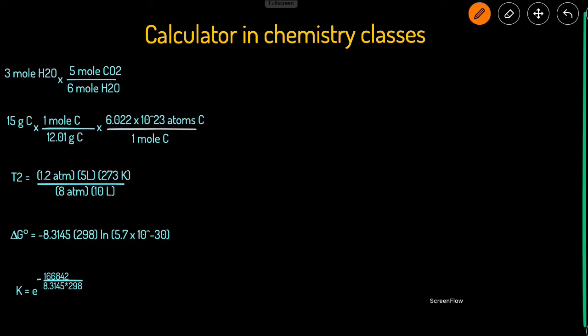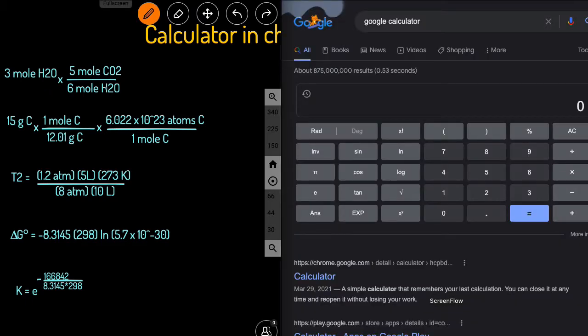On the left-hand side here, I have five chemical expressions, and we're going to go through entering this in the Google calculator that you can see on the right-hand side, and we'll see what the answer should be.